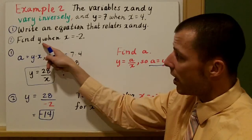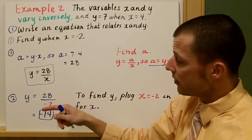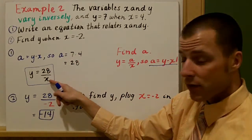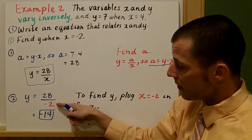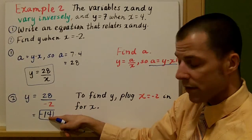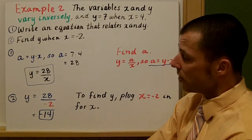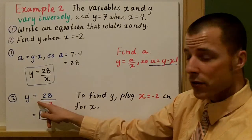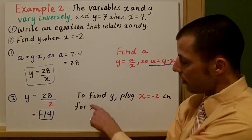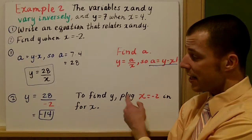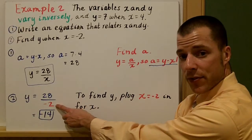Step two: they're asking us to find y when x equals negative 2. All we need to do is substitute negative 2 in for x. So 28 divided by negative 2 is negative 14. When you have your inverse variation equation and you're looking for either x or y, just plug in what you know.